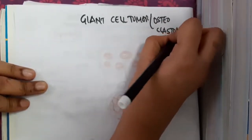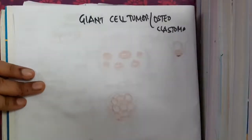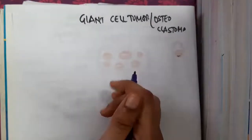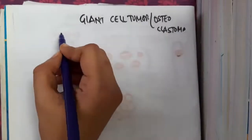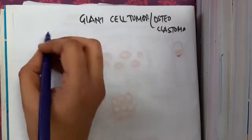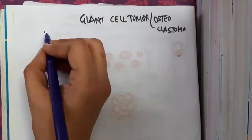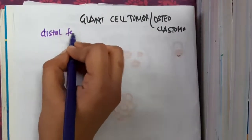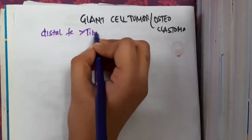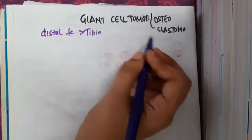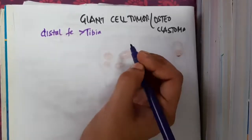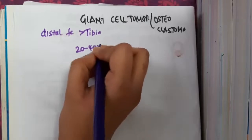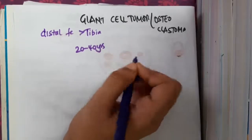In the giant cell tumor or osteoclastoma, one important thing is this is actually the most common tumor which is seen around the knee joint — most commonly seen in the distal femur more than the tibia. This tumor is seen in the age group of 20 to 40 years of age.